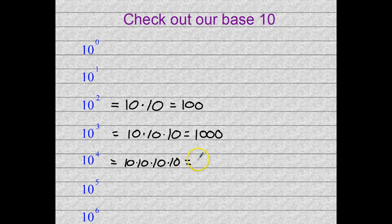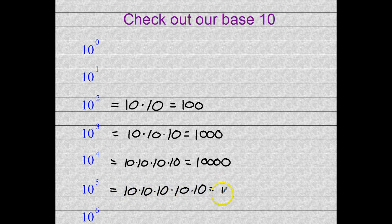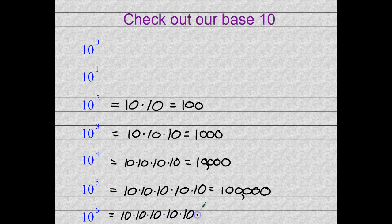10 to the fourth power would be 1 with 4 zeros, or that would be called 10,000. And I'm just going to keep going here to show you a pattern. That would be 1 with 5 zeros, also known as 100,000. And this is 1 with 6 zeros, also known as a million.